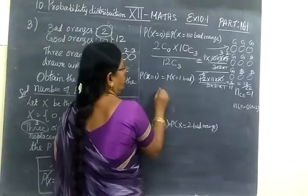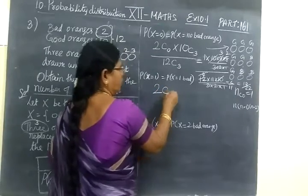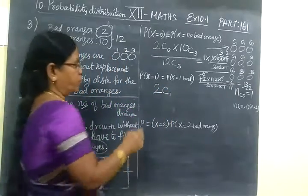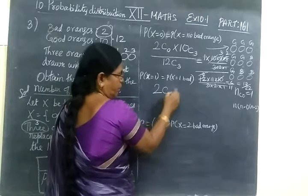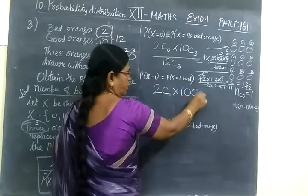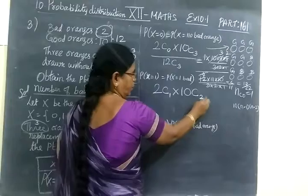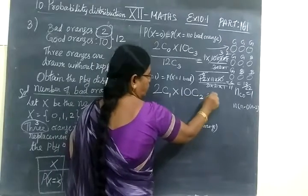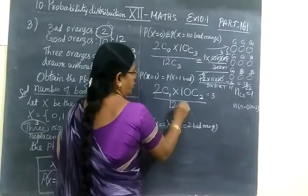Here P of X equal to 1. So from 2 oranges we are selecting 1 bad orange. This is 2 bad oranges, from that we are selecting 1 bad orange, into 10 C 2. Because totally we are selecting 3, 1 plus 2, totally we are selecting 3, by 12 C 3.